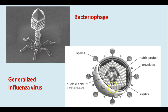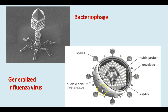Here's a generalized influenza virus showing that it's got the nucleic acid inside the capsid and then it's got an envelope around it. The ones that have envelopes are oftentimes the ones that cause diseases that are easy to catch, because the envelope is often made of cell membrane components of the host cell, so it's easily recognized by the cell as being part of itself.